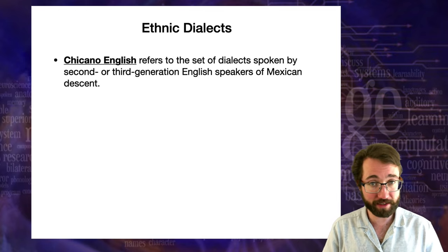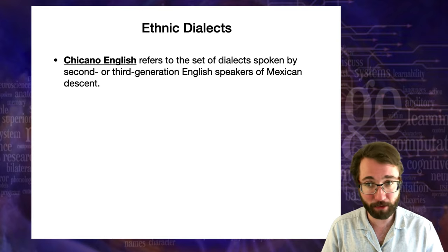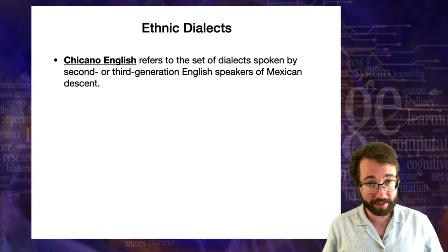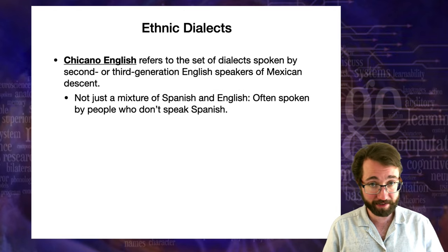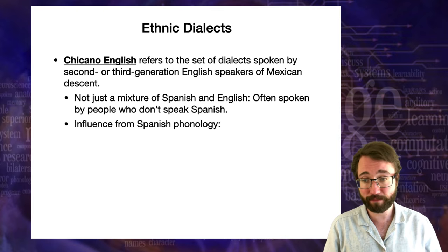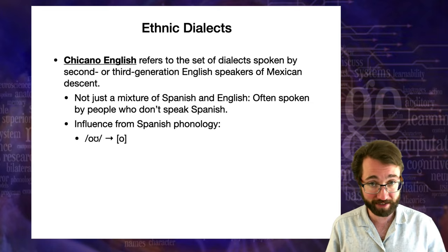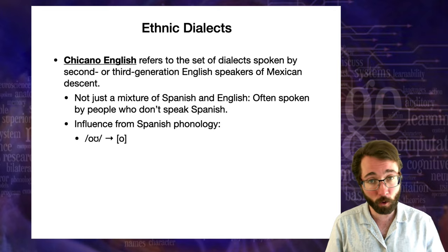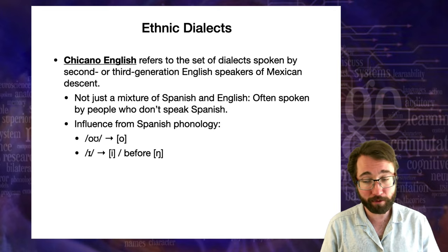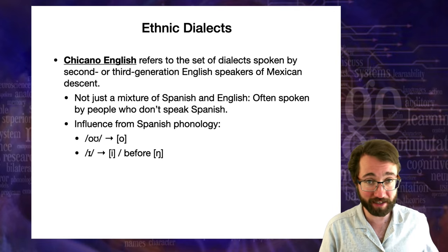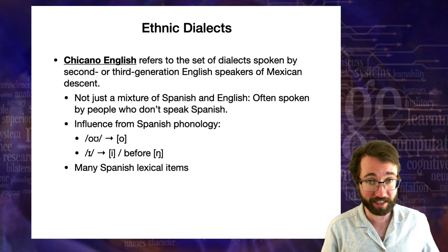Another major ethnic variety in the US is Chicano English, which refers to the set of dialects spoken by second or third generation English speakers of Mexican descent. These are people who may not speak Spanish, but whose dialect of English is distinct — it's not just a mixture of English and Spanish. It has influence from Spanish phonology, including a kind of monophthongization where the diphthong /oʊ/ is pronounced as /oː/ and the phoneme /iː/ is expressed as /e/ before /ŋ/. There are also many Spanish lexical items in this dialect.